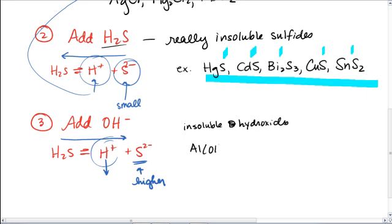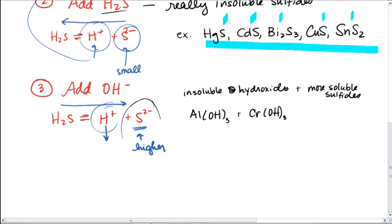It's going to cause our insoluble hydroxides to precipitate out, because we've added hydroxides. And those are going to be, like, aluminum hydroxide and chromium hydroxide. But it's also going to allow the more soluble sulfides to precipitate out, because the concentration of sulfide ion is going to be higher. And so that's going to include things like the cobalt sulfide, zinc, manganese, nickel, and iron.